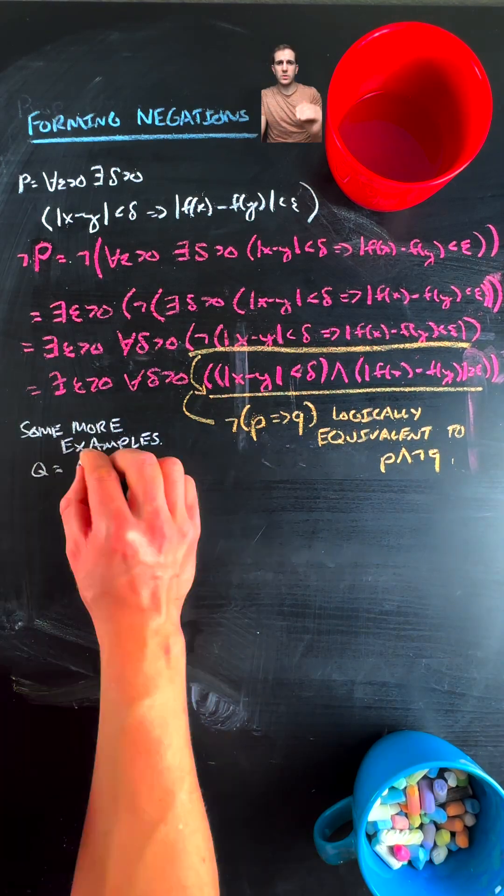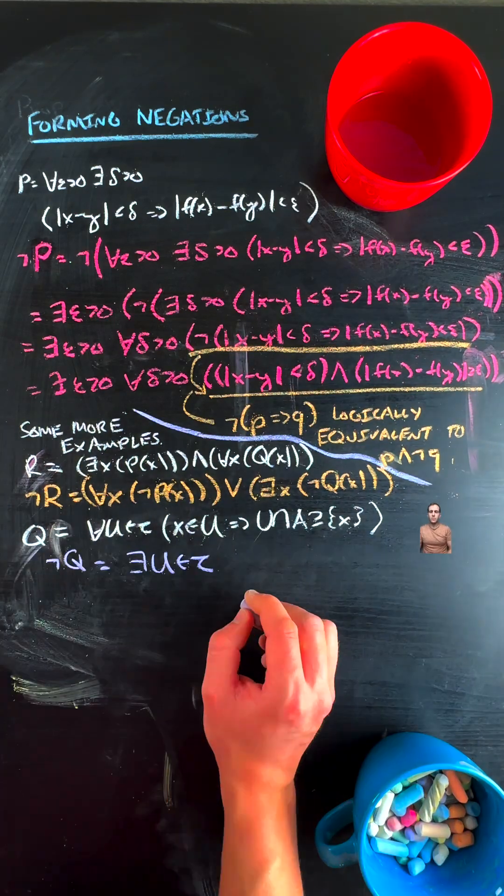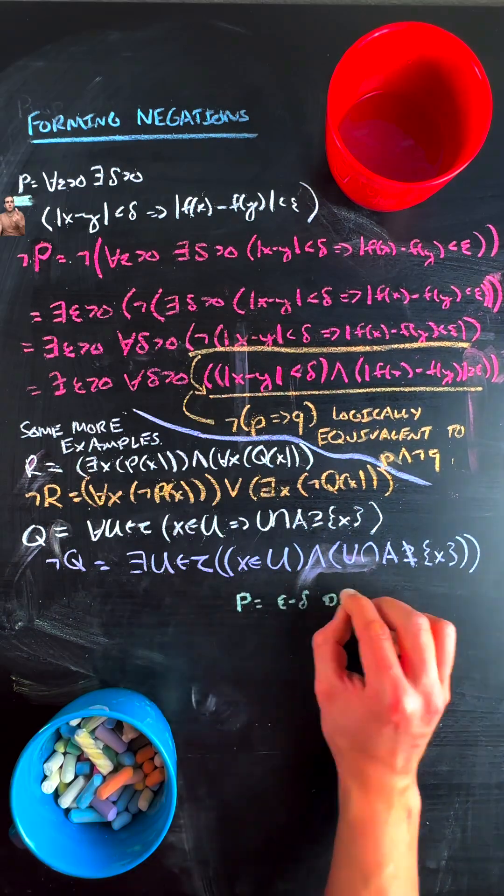But then for these last two examples, I've just given the solution since they are exercises from a video I did. But they're important. This first example though is actually the negation of what it means to be continuous.